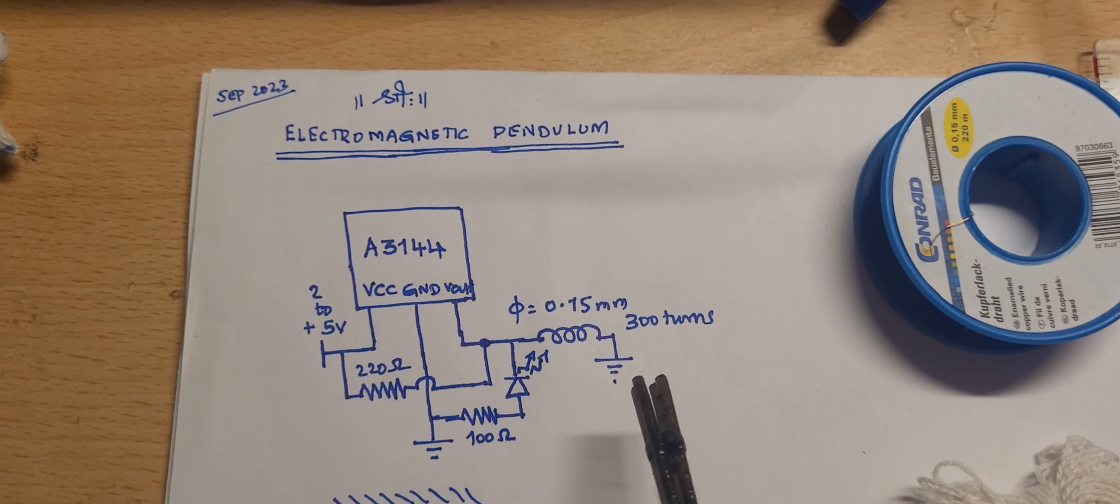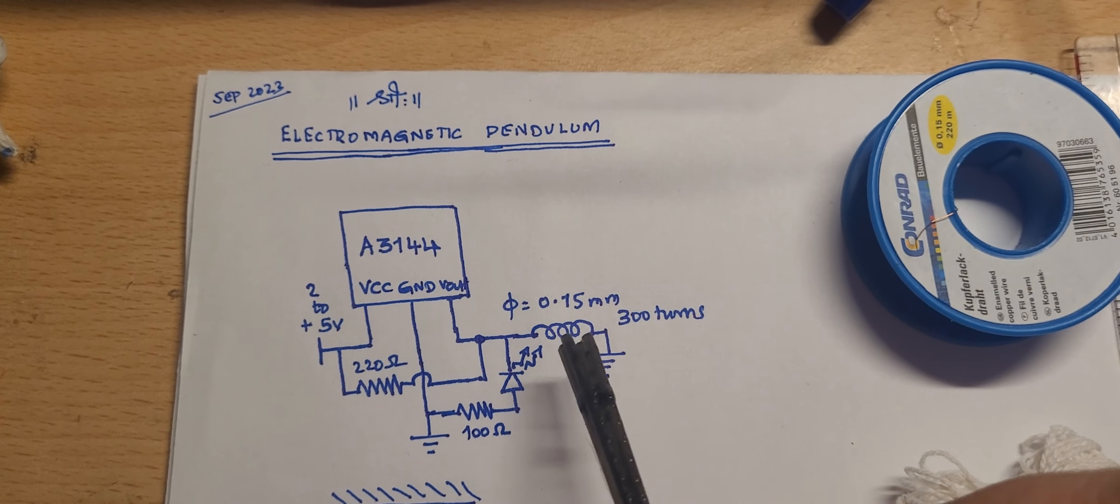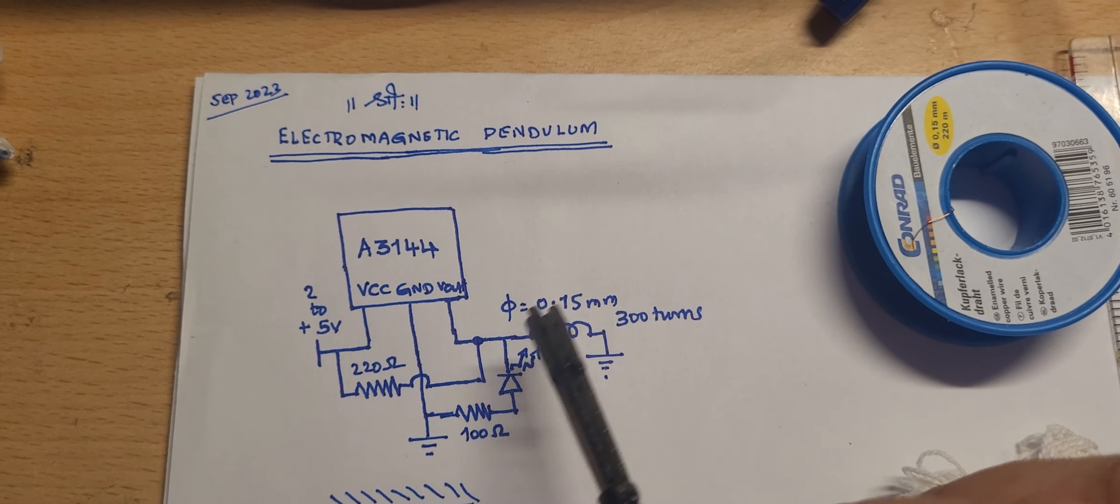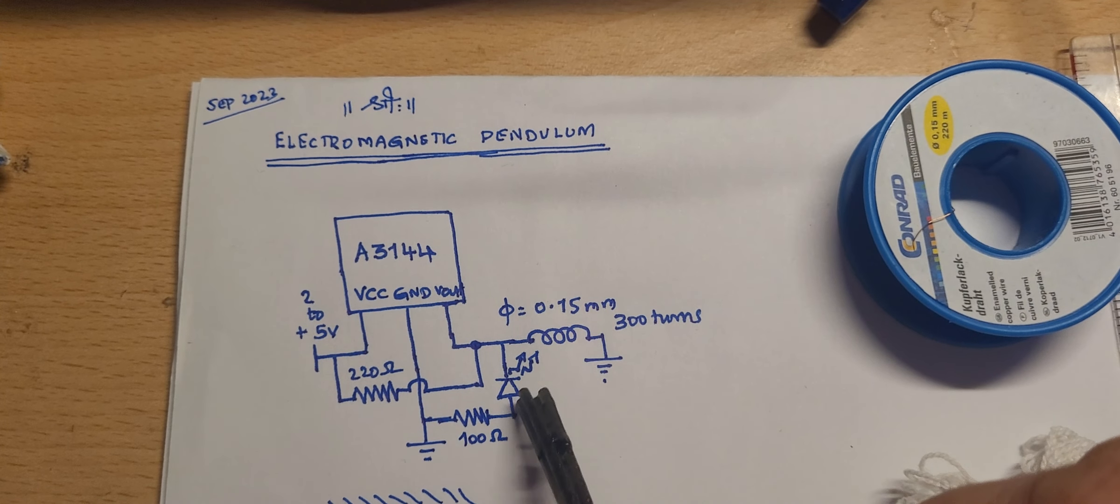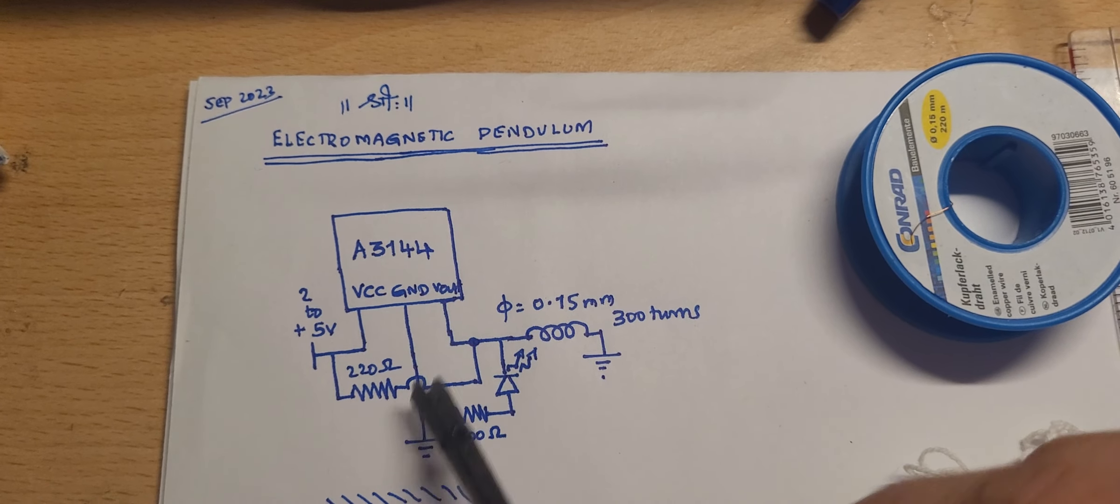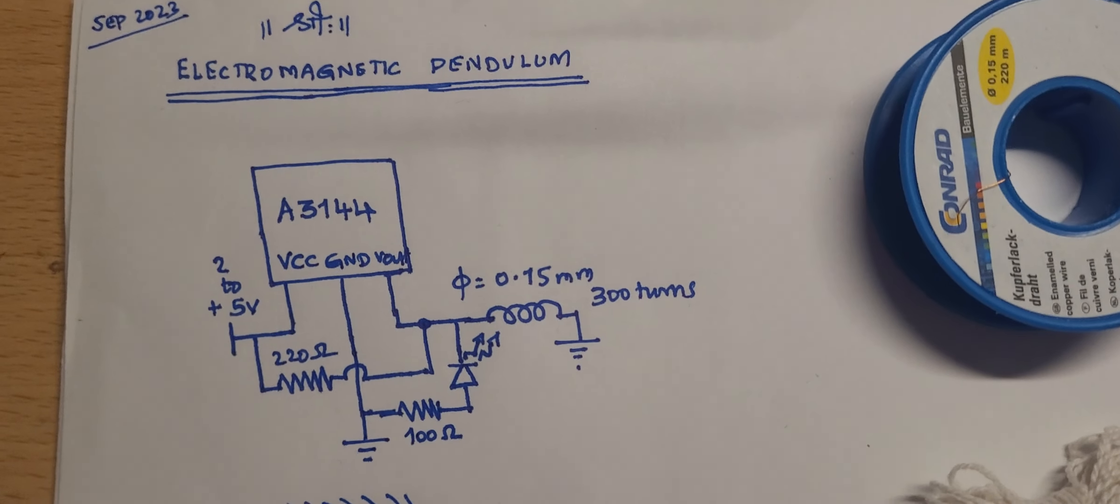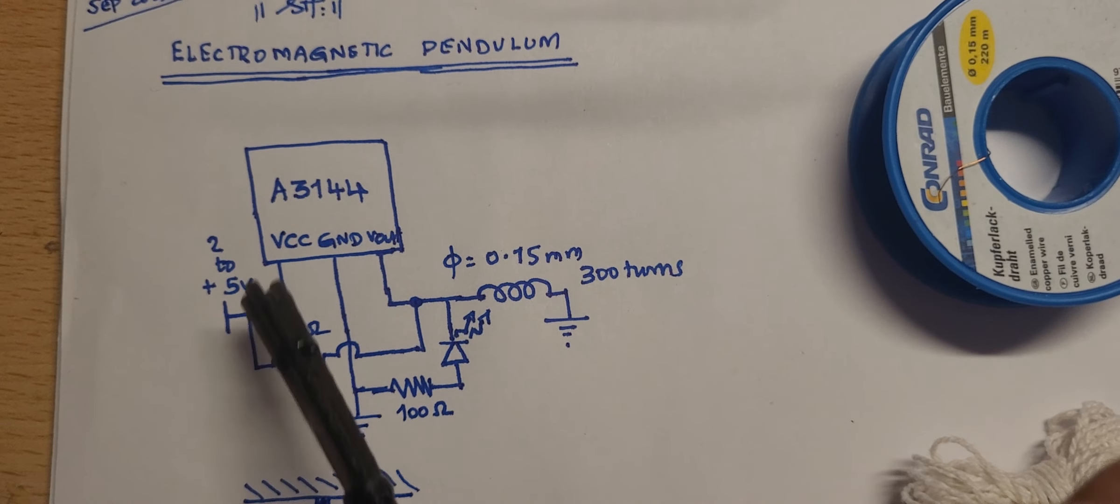When this is turned on, the output is connected to a coil. It's around 300 turns of 0.15 millimeter diameter. This is turned on and it creates a magnetic field. This is also indicated by this LED which is connected by 100 ohms to the ground.